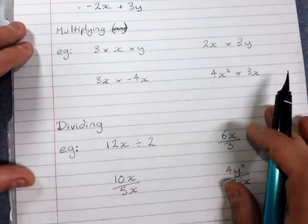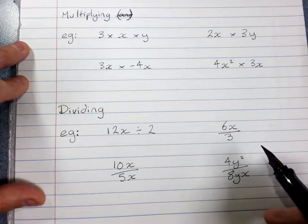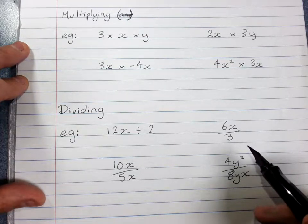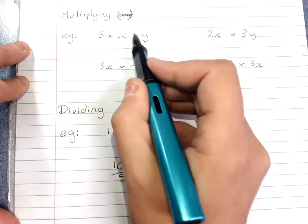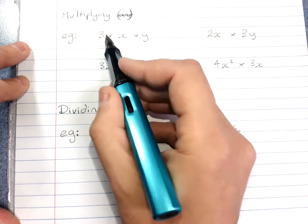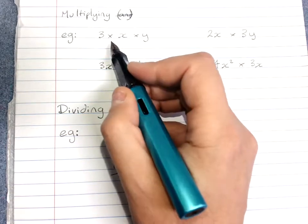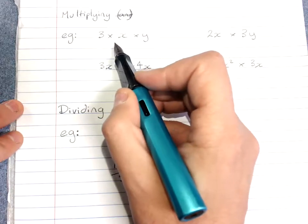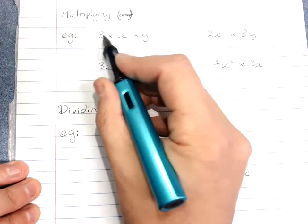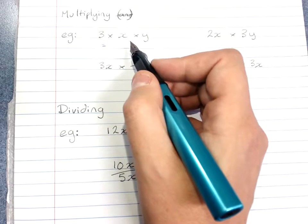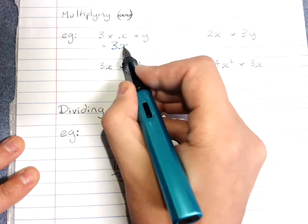Now that's different to multiplying and dividing. In multiplying and dividing, you can change the powers. Because multiplying and dividing is different. 3 times x times y. Well in algebra we don't use times signs. So we check if there's any things that are the same that we need to multiply together. Because if there were two x's I'd multiply them together and get x squared. But there's not. So this is just written without the times signs. That's 3xy.